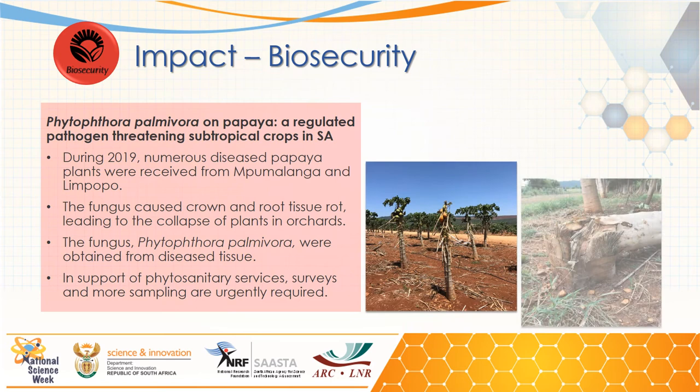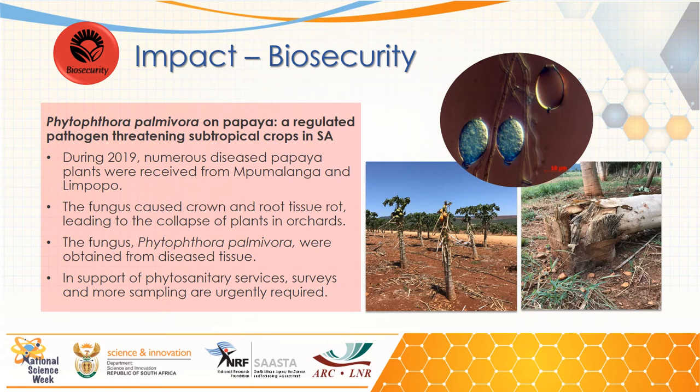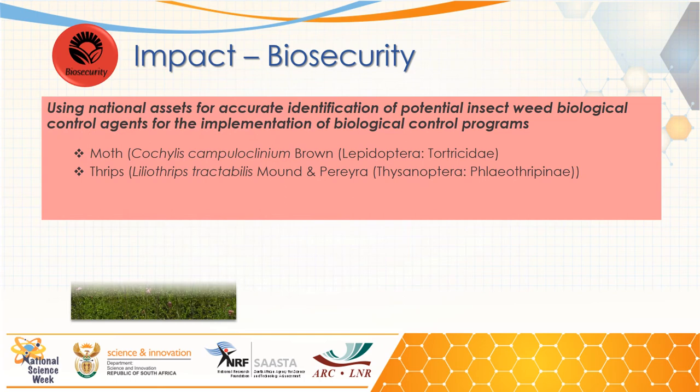The national assets contribute towards biosecurity in the country. Phytophthora pomifora was recently recorded from papaya in South Africa. This fungus causes crown and root rot on papaya and can have a devastating effect on the crop. Through regular survey sampling and monitoring, phytosanitary services are supported in the country.